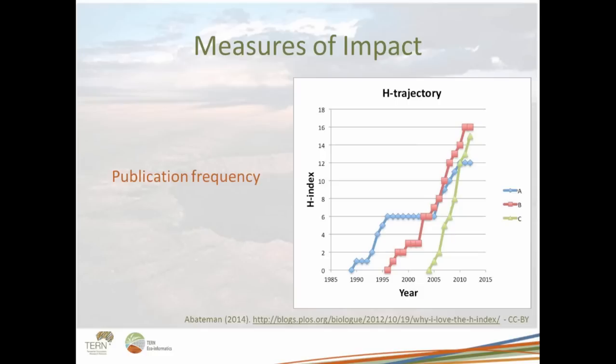Another way of measuring impact is through publication frequency. The H-Index is a metric of impact despite its shortcomings and some debate around it. Here we have publishing profiles for three researchers: Researcher C has a stellar performance by publishing many papers in high-end journals in a short time span. Researchers A and B have slower rates of publication and find it more difficult to achieve stellar performance. I see myself more as a Researcher A type — I'm currently more of a Sunday League publisher.